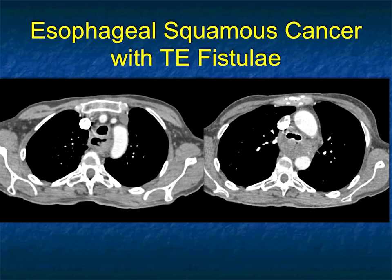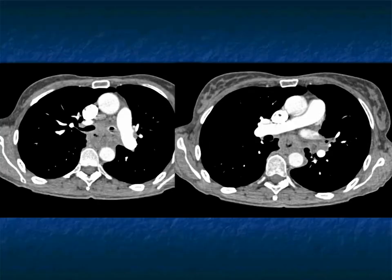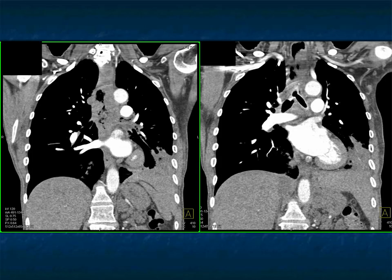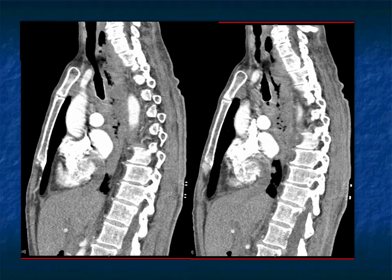Here's another squamous carcinoma with a TE fistula and a large bulky mass. It's rare for esophageal cancer to erode vessels unless related to trauma such as biopsy. In this case there is extensive mediastinal adenopathy, with tumor growing around the left main stem bronchus. When you see all the adenopathy in the mediastinum, you know you're dealing with malignancy — not simply esophagitis. The length and bulkiness of this squamous cell carcinoma is really impressive.